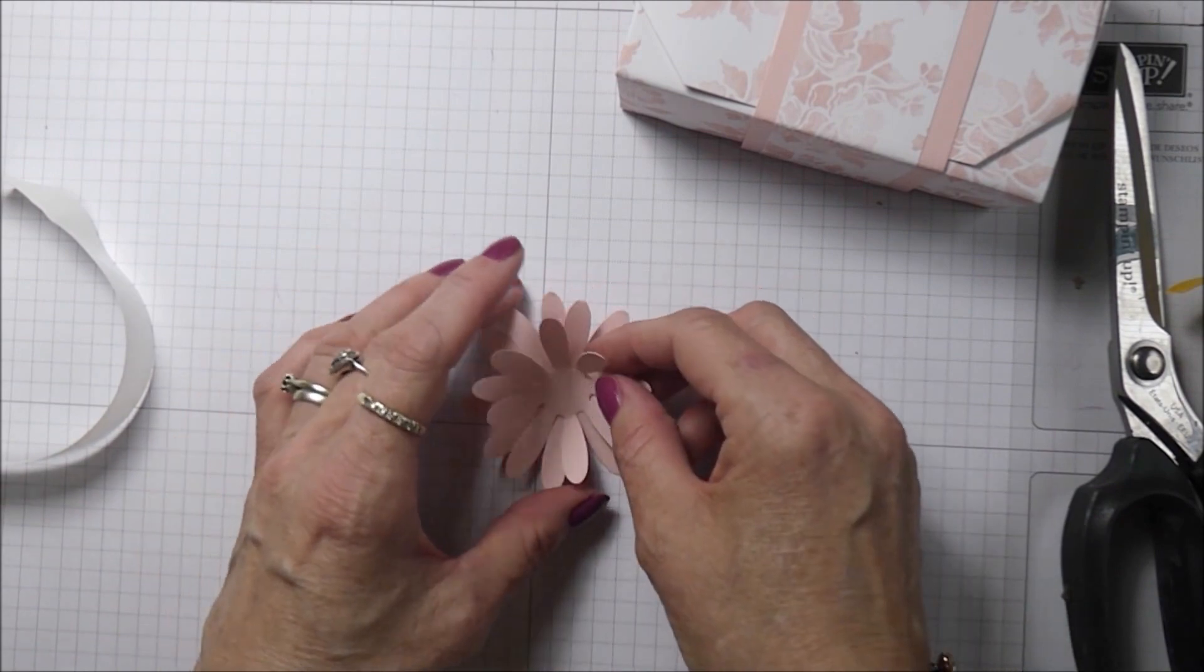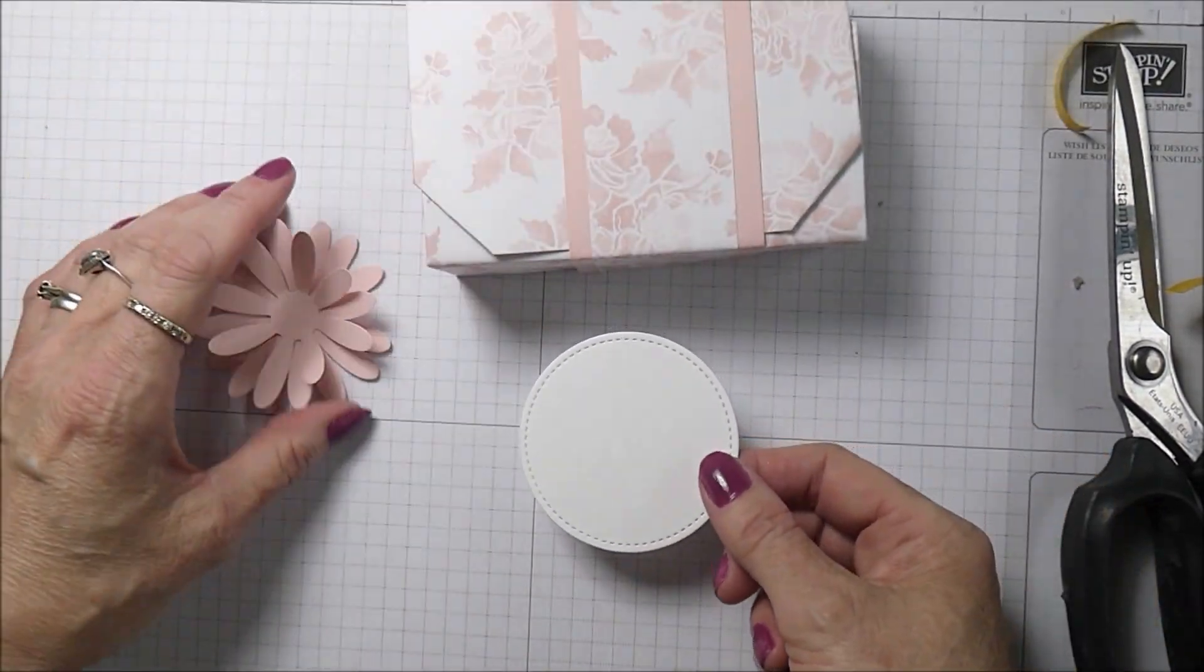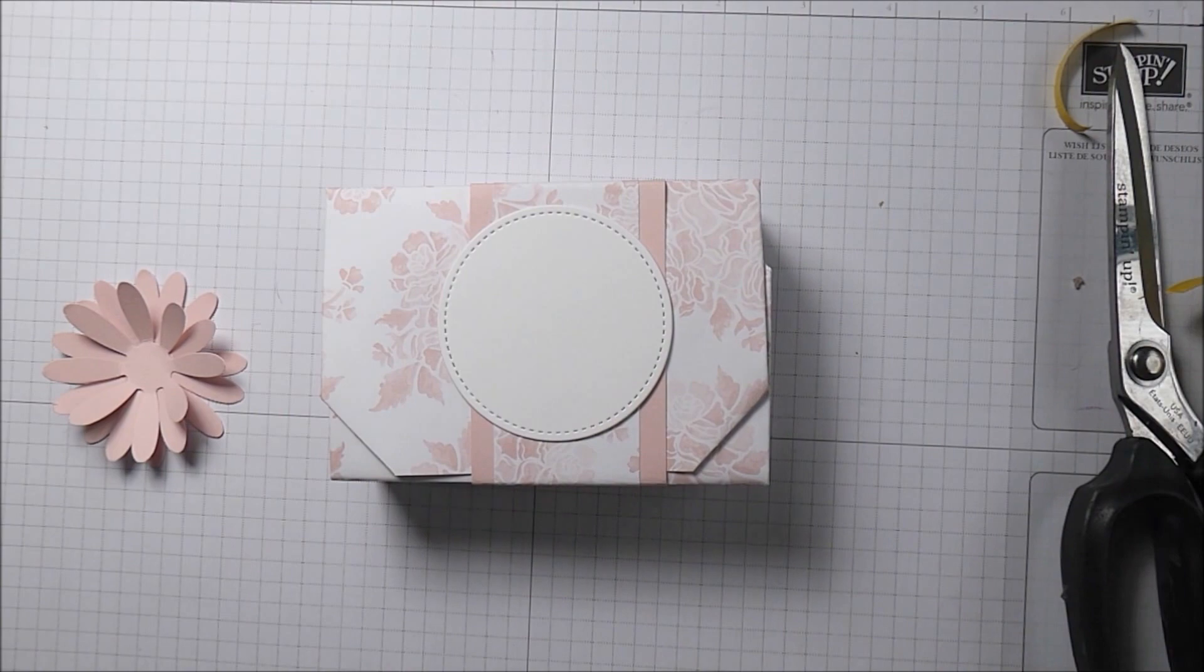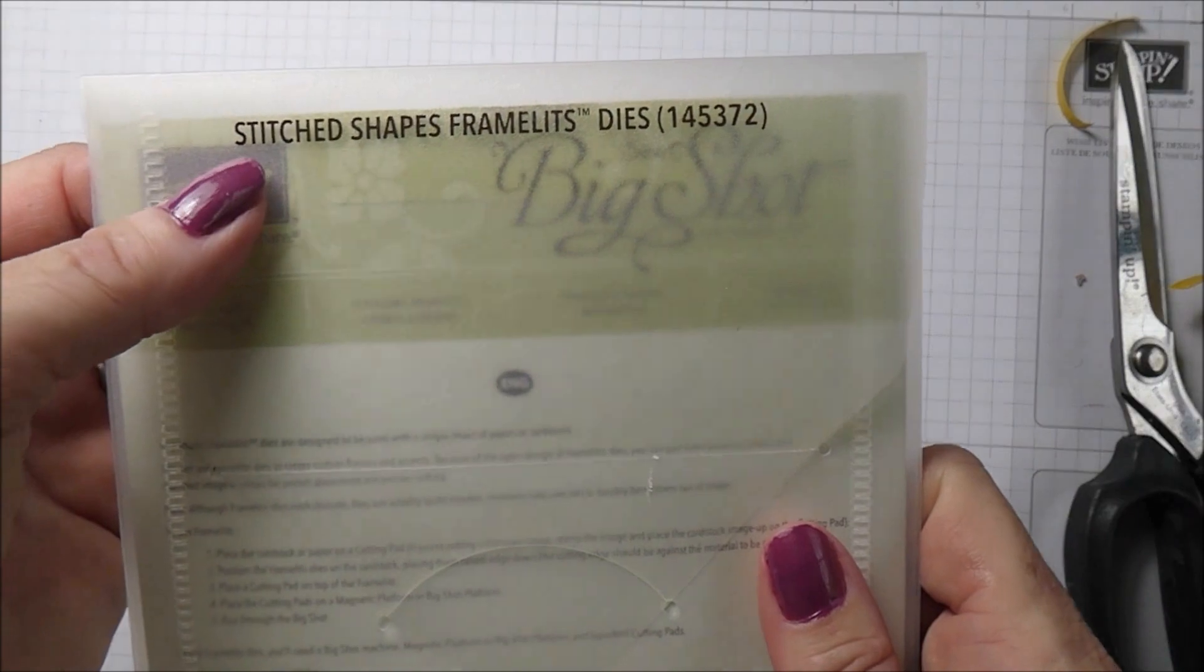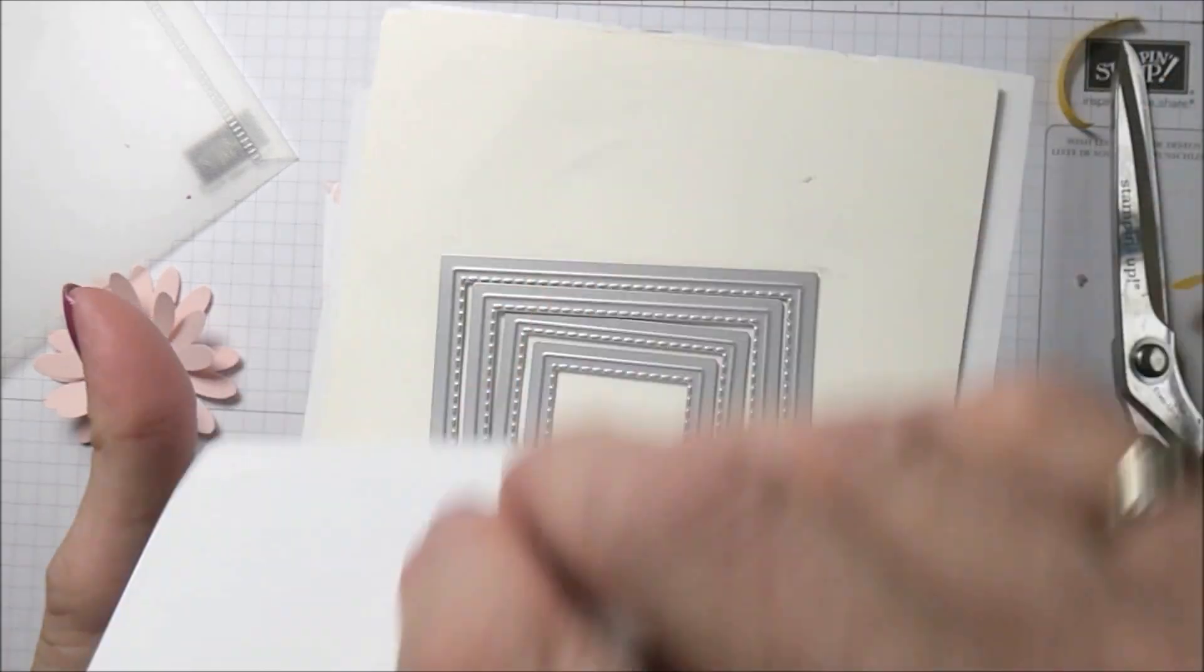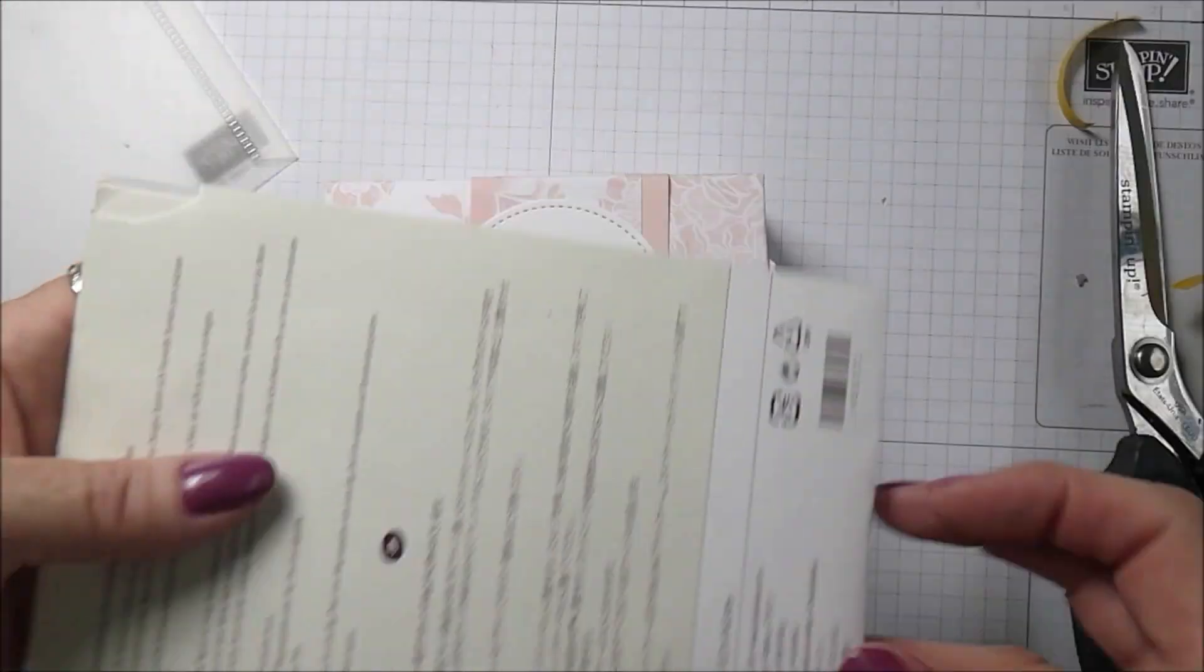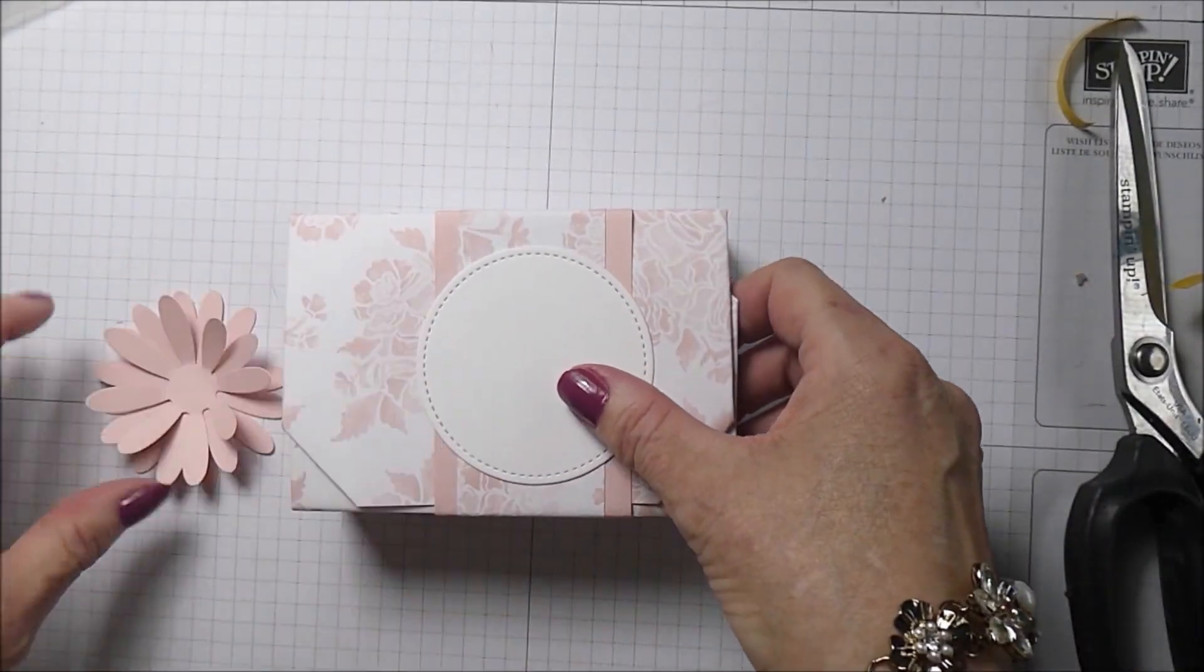I decided to set it on one of these dies which I've cut. This is a circle, it's a stitched shape die. It comes from this set of dies here which are called stitched shapes framelits. You get a series of dies here. We've got circles and ovals and squares. I just think they're really useful and they make a really nice interesting background for a topper.